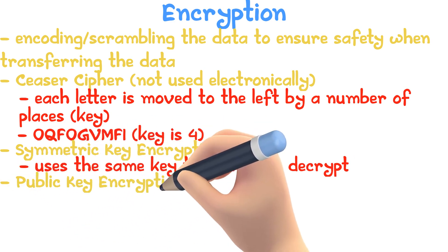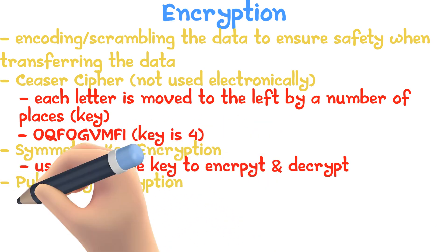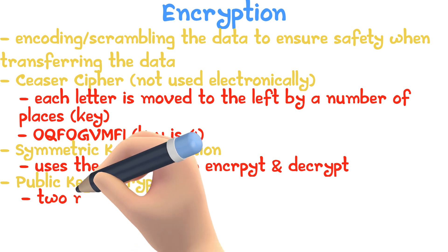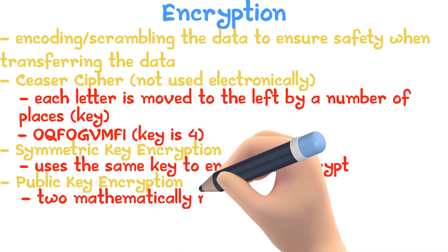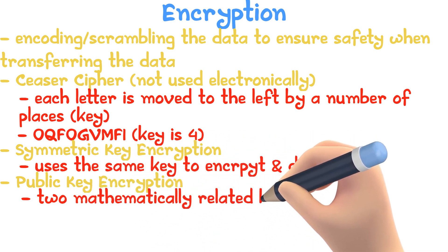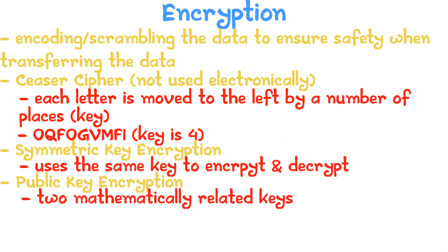Public key encryption uses two mathematically related keys to encrypt and decrypt the data. This is called the key pair. One key, the public key, is shared with the other computers. The other key, the private key, remains private.